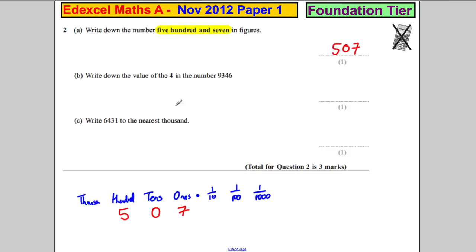507. Write down the value of four in 9346. Well, let's write 9346, 9346. What's the value of the four? The four here are four tens, which are 40.